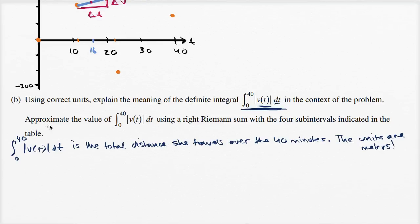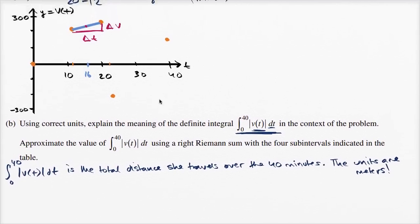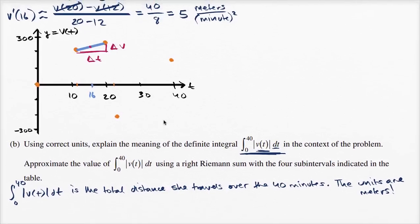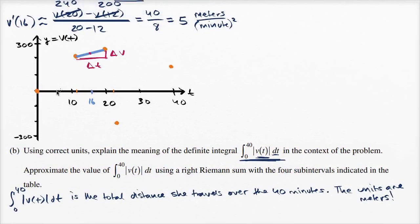Now they say to approximate the value of that integral using a right Riemann sum with the four subintervals indicated in the table. Let me draw the absolute value of v of t to help understand what we're actually going to do when we talk about a right Riemann sum. In orange I have v of t, but if I do the absolute value of v of t, I'll do that in magenta.